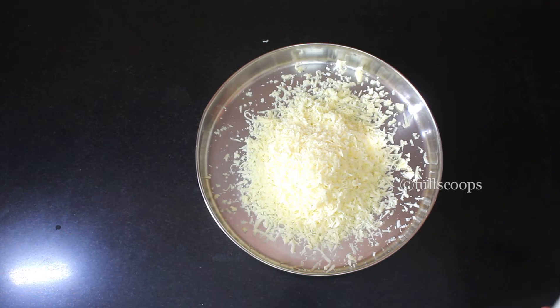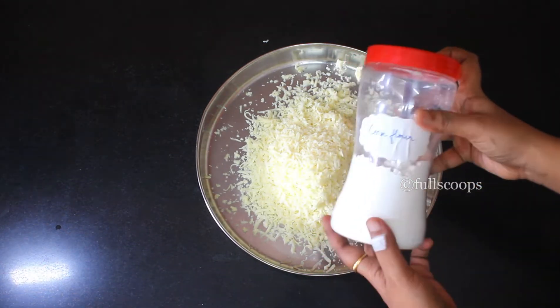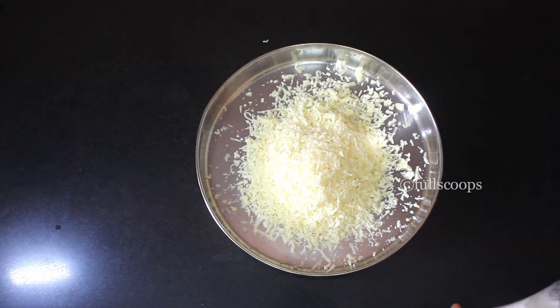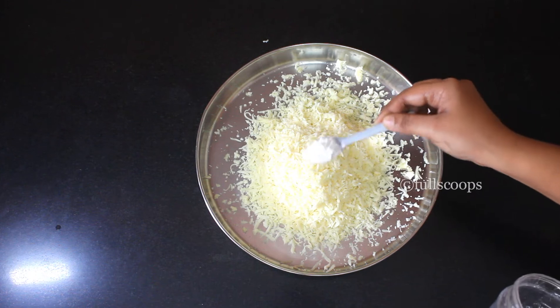Once you have grated the whole block of cheese, take a little bit of corn flour. I am using about 1 teaspoon of corn flour. This is a small half teaspoon measure.